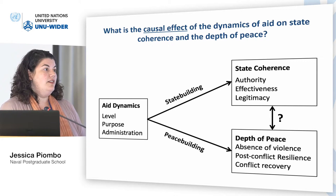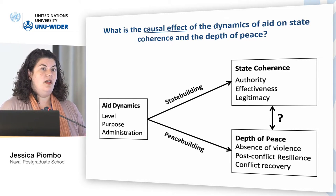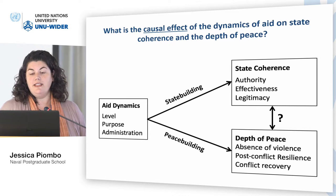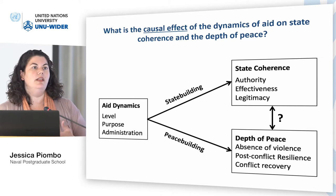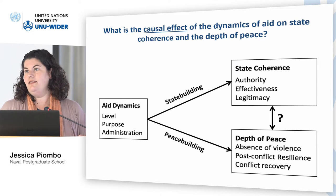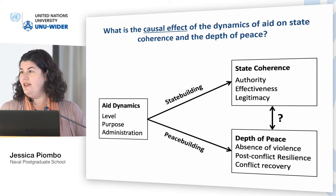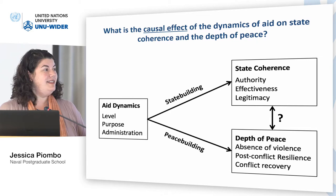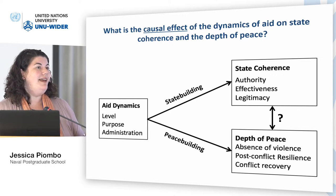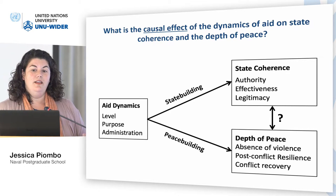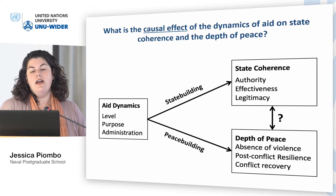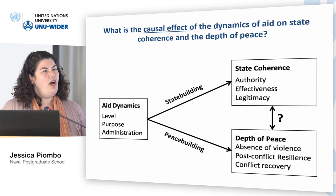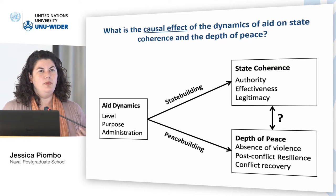Legitimacy is more of a social dynamic — how does the average citizen view the institutions of the state? So something like: if there's a conflict at the local level, do individuals go to state authorities, to tribal authorities, to local elders? What mix of that? Are they always trying to bypass the state? Legitimacy is one of those fundamental dynamics of stateness that is hard to quantify but is really important.